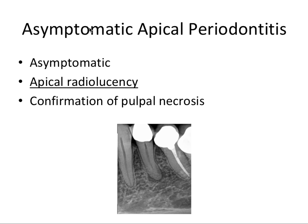Next we have asymptomatic apical periodontitis. As the name implies, this one is asymptomatic. It involves an apical radiolucency — this is where X-rays really come in handy — and it is a confirmation of pulpal necrosis. A totally necrotic pulp provides a safe harbor for primarily anaerobic bacteria that leak out into the PDL space. A periapical radiolucency can be a radicular cyst or a periapical granuloma depending on the exact histology, but the key sign is the radiographically evident radiolucency at the apex.